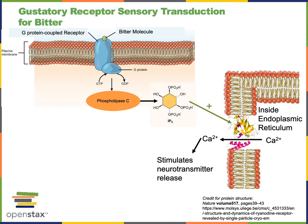The transduction mechanism for bitter is very similar to the savory taste. Bitter molecules such as theobromine, found in chocolate and responsible for its bitter taste, will bind to G protein coupled receptors on the surface of gustatory receptor cells. These G protein coupled receptors activate the enzyme phospholipase C to produce the second messenger inositol triphosphate. IP3 then activates the IP3 receptor calcium channel on the endoplasmic reticulum, leading to movement of calcium into the cytosol, which stimulates the release of neurotransmitters from the gustatory receptor cell onto the dendrites of the afferent neurons.